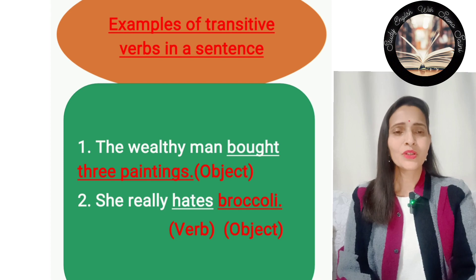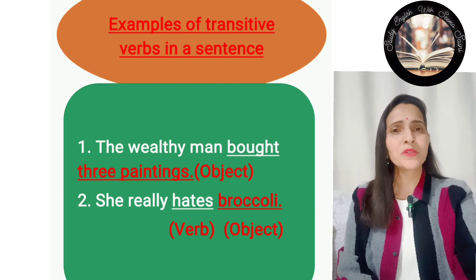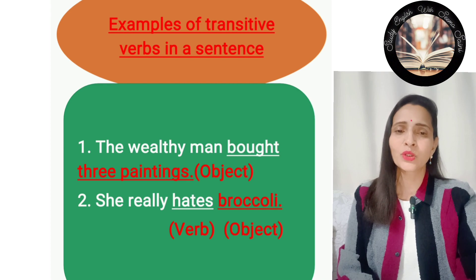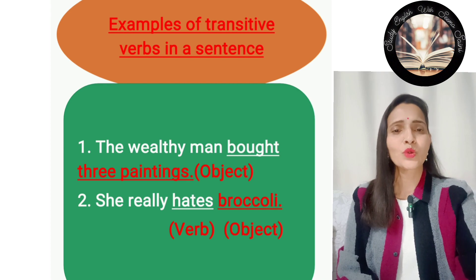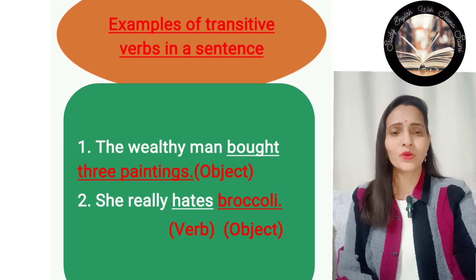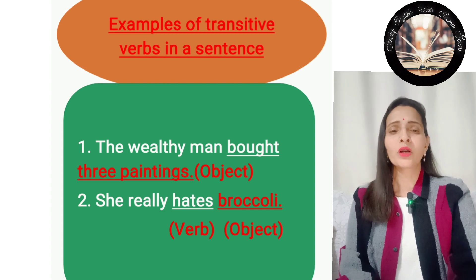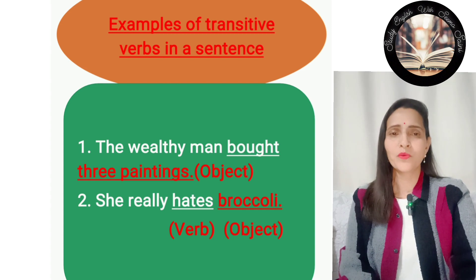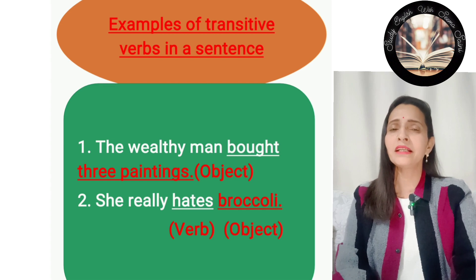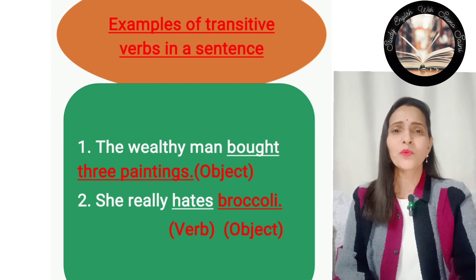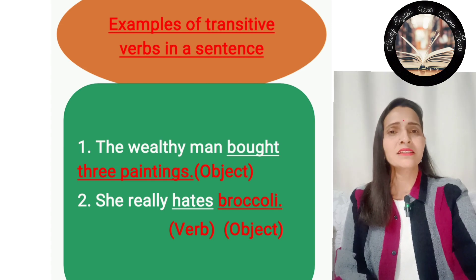Since 'bought' is accompanied by a direct object, it is a transitive verb. Another example: 'She really hates broccoli.' Here, 'hates' is the verb and 'broccoli' is the direct object. Since 'hates' is connected with a direct object, this is a transitive verb.